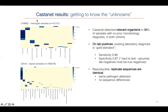We looked at the clinical unknowns — samples where there was no prior microbiology diagnosis in either cohort. In about 34% of these samples, in both cohorts, we were able to detect a relevant pathogen. Some of these samples had been through quite a few tests already; we were working with depleted or near-depleted samples that had been through multiple freeze-thaw cycles, so there was quite a range in sample quality.